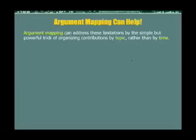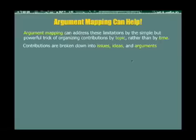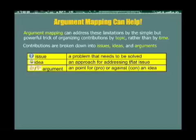Argument mapping can help with this. It does so by the simple but powerful trick of organizing contributions by topic rather than by time. Contributions are broken down into issues, ideas, and arguments. An issue represents a problem that needs to be solved. An idea represents an approach for addressing that issue. An argument represents a point for or against an idea — a for point is called a pro, and an against point is called a con.